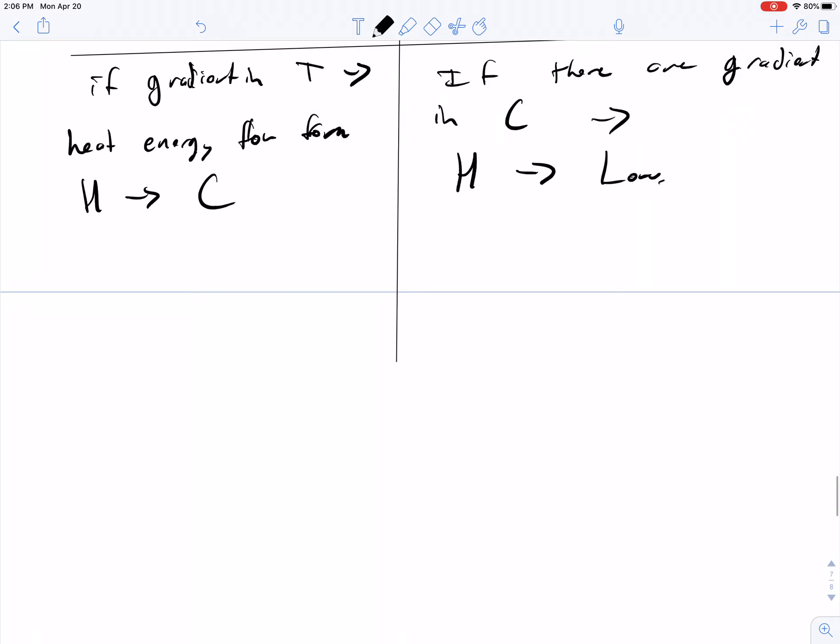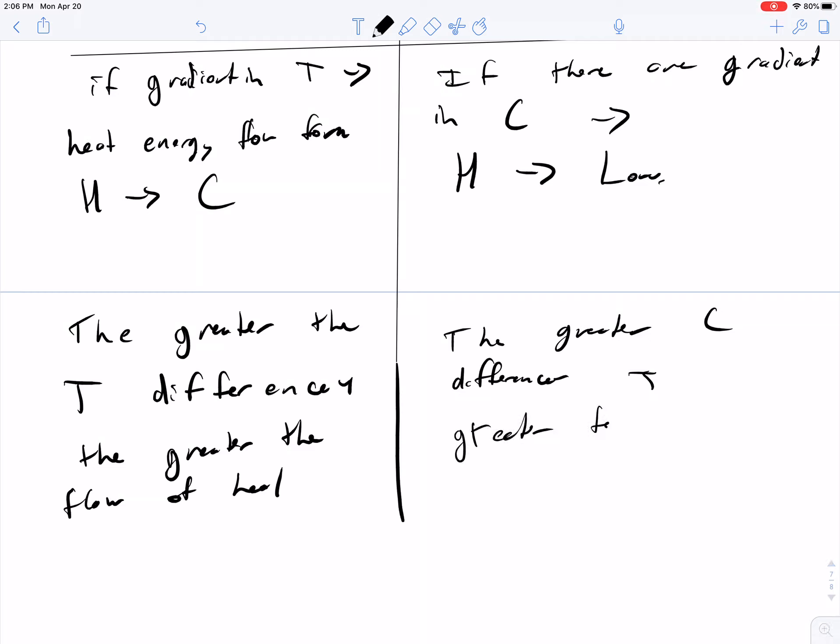Fourier found that the greater the T difference in two regions for the same material, the greater the flow of heat. The greater C difference leads to the greater flow of mass.